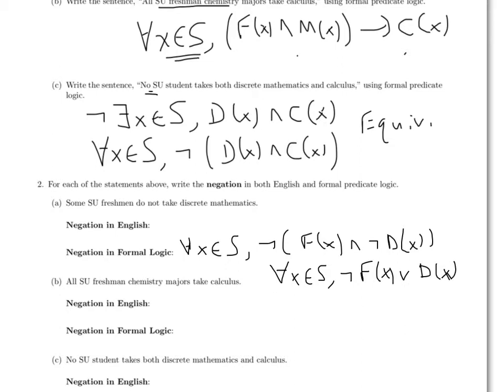So the negation here would be, every SU student is either not a freshman or takes discrete math. So that would be a better way to say it. And then one could write that in English just as easily.